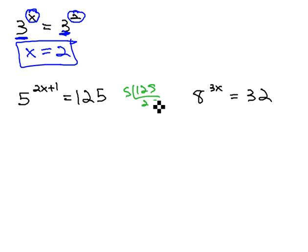125 is divisible by 5, 25 times, and 5, 5 times, and 5 once. In other words, 125 is 5 to the 3rd power. So on the left side we've got 5 to the 2x plus 1, and on the right side we have 5 to the 3rd power.